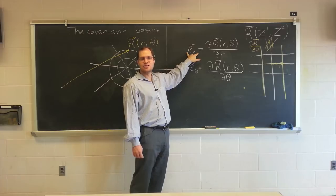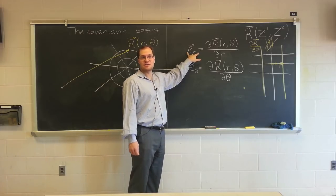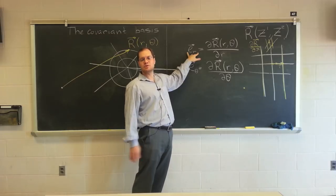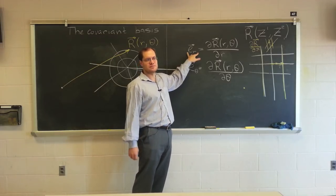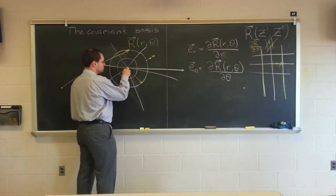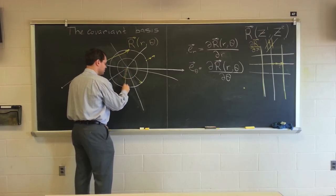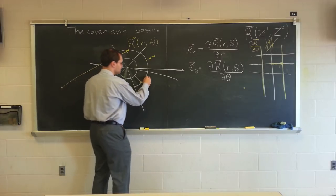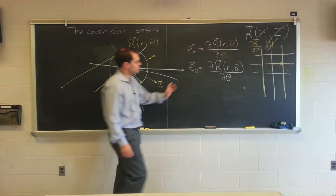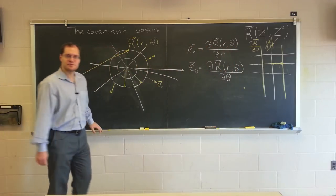It would be a crime to write e sub r as cosine(theta) i plus sine(theta) j — an absolute crime — because it introduces a background coordinate system, which is totally contrary to the spirit of all coordinate systems being equal. Because it is a geometric object, the best you can do is describe it with words or pictures. In words: it's the unit vector that points in the radial direction. What characterizes affine coordinate systems is that the coordinate basis is the same at all points. Here, the coordinate basis will be different at all points.